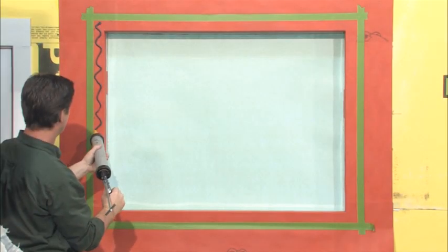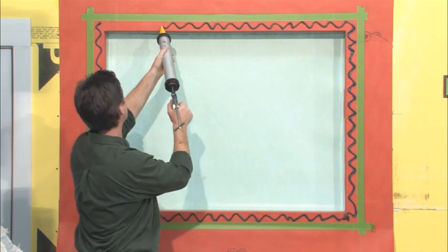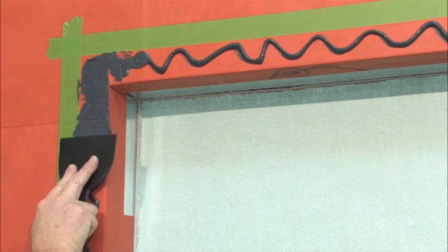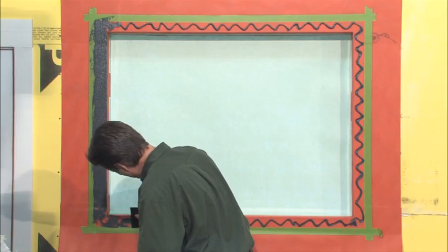Using a sausage gun, apply vapor liqueflash in a zigzag pattern on the wall face surrounding the rough opening. Immediately spread the liqueflash with a putty knife creating a 2 inch border around the rough opening, as shown here by the masking tape.